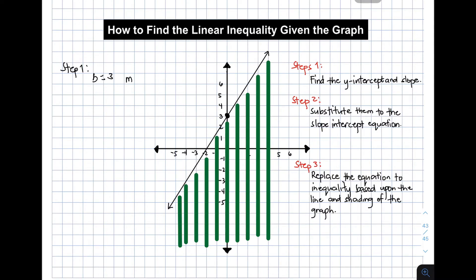For the slope, we need to use the rise over run. I will locate another point, and my target here is to use this point because it crosses the x-axis. So this will be your second point for you to find the slope. Starting from this point going to this point, the value of your rise is 1, 1, 2, and 3 — so that will be 3.